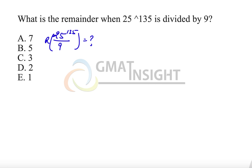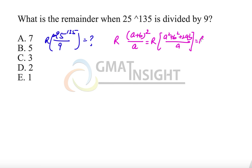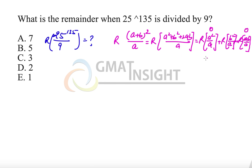To answer this, we need to understand a basic concept. If we ask: what is the remainder when (a + b)² is divided by a? Expanding, (a + b)² = a² + b² + 2ab. The remainder when a² is divided by a is zero, and the remainder when 2ab is divided by a is also zero, since both are divisible by a. So the result is simply the remainder when b² is divided by a.